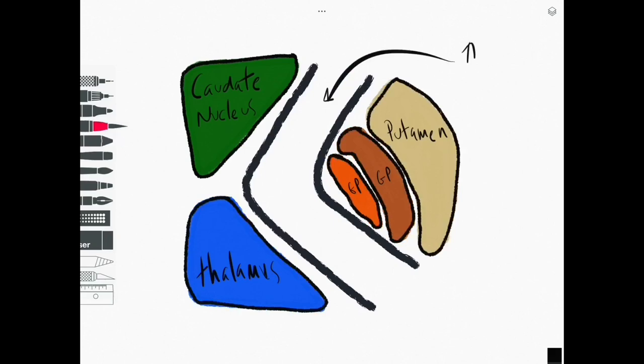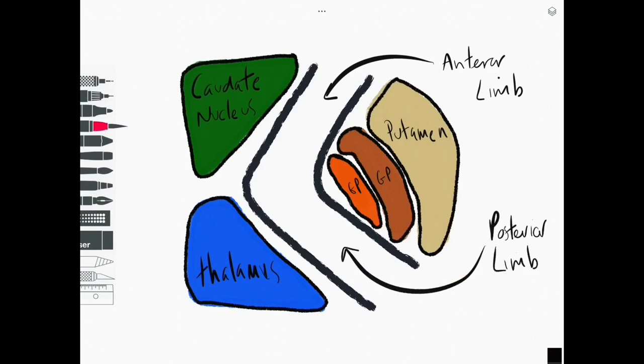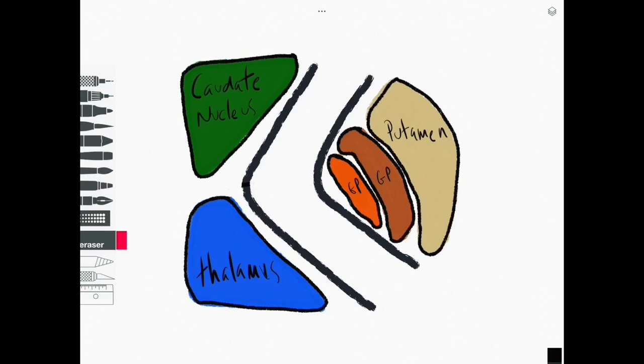The internal capsule is a collection of ascending and descending axons and it is divided into three components: an anterior limb and a posterior limb and a flexor in the middle called the genu. Certainly with this transverse view this is how we can see it.